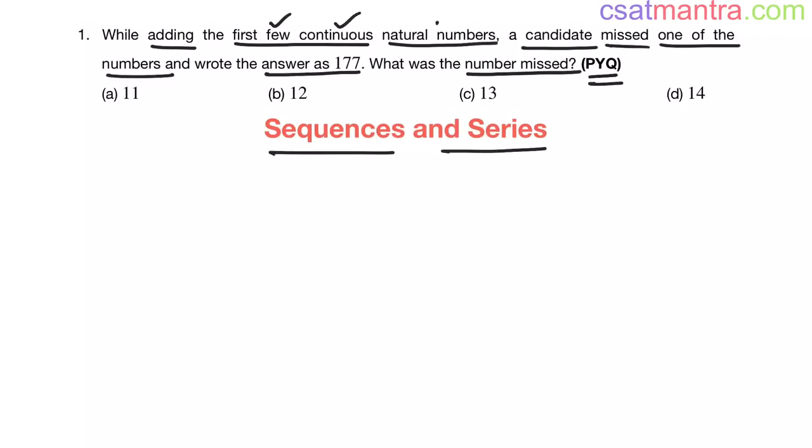First few continuous natural numbers: 1, 2, 3, up to n. Now their addition—see they are in arithmetic series, common difference is 1. So their sum would be first term plus last term by 2, average of first term and last term into number of terms. So this is the sum.